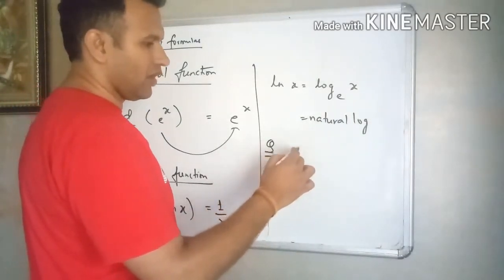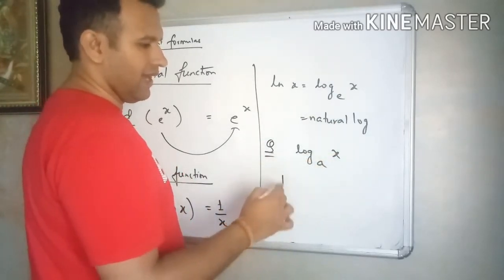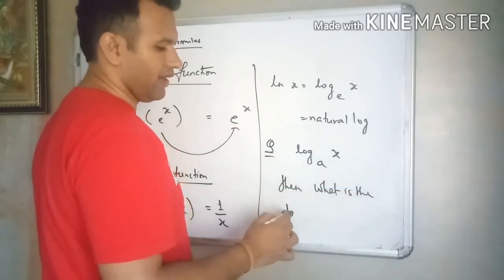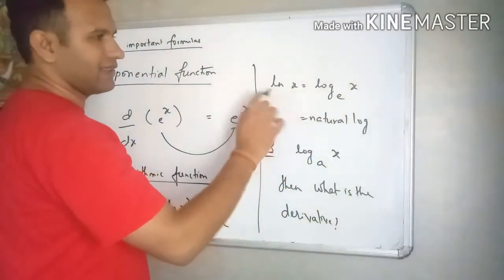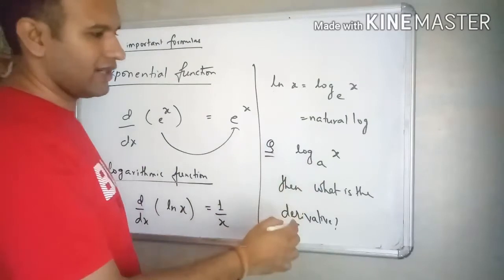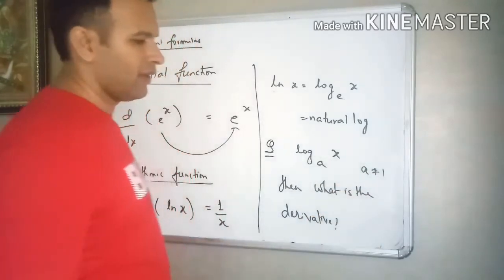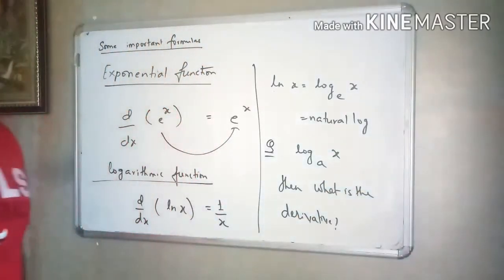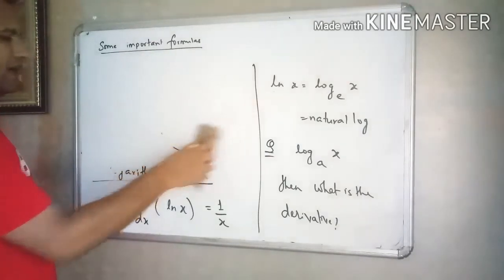The next question is: if the base is not e but is some value a, then what is the derivative? So we will discuss this. If the base is e, that is ln x natural log, then it is 1 by x. But if the base is some other constant a, where a is not equal to 1, let us find its derivative.